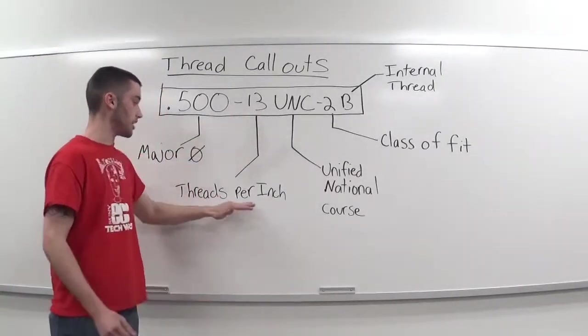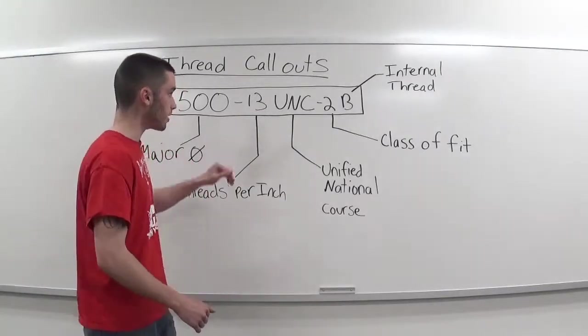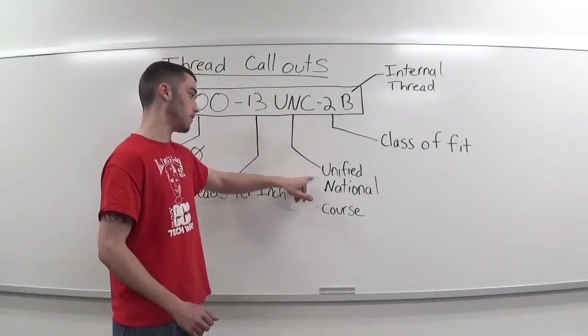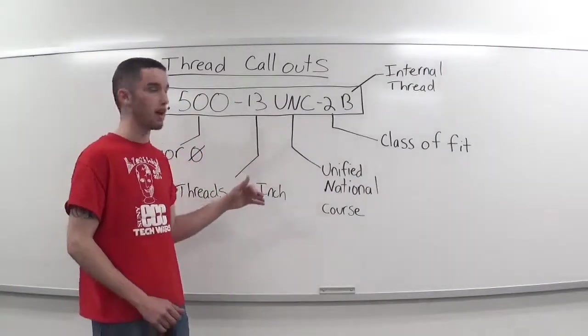You have your 13, which is your threads per inch. So for every inch you'll have 13 threads. Then you have UNC, which is Unified National Coarse. You also might see Unified National Fine, which is called out with UNF.